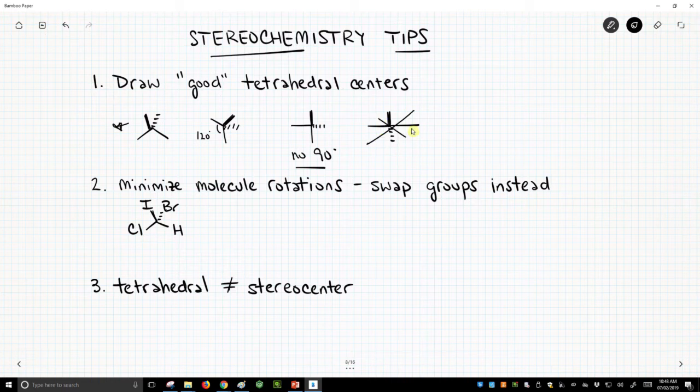What's the second tip? The second tip is to try to minimize the rotations you do of your molecules. Different instructors have different philosophies on this, but you can see this structure here. This is a stereocenter. Our carbon has four different substituents coming off of it, hydrogen, chlorine, bromine, and iodine.